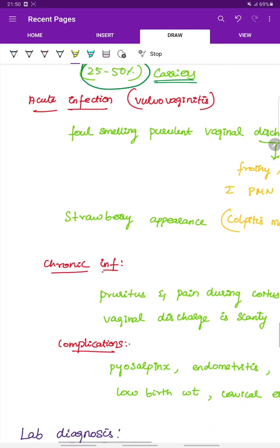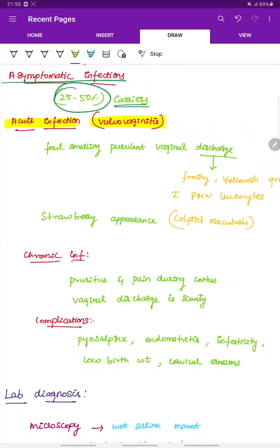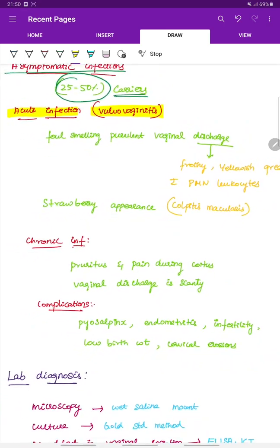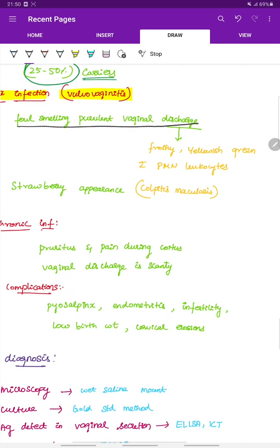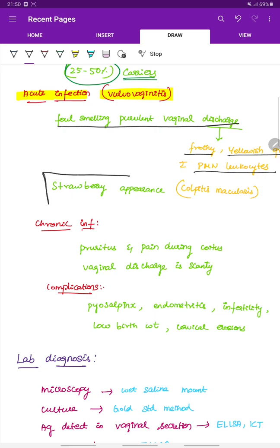Next is acute infection. It is vulvovaginitis. In acute infection of Trichomonas vaginalis, there is foul smelling purulent vaginal discharge. And this discharge is frothy yellowish green with polymorphonuclear leukocytes. And there is strawberry appearance of vagina called colpitis macularis.